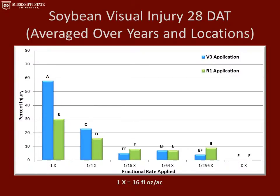This graph represents soybean visual injury 28 days after the application was made. With the 1x rate, we had greater than 30% visual injury for either application timing. I'd like to point out that with the three lowest application rates — the 1/16x, 1/64x, and 1/256x rates — it was very hard to distinguish those from each other in the field; they looked very similar. Injury was less than 10% for all of those rates, no matter when the application was made.